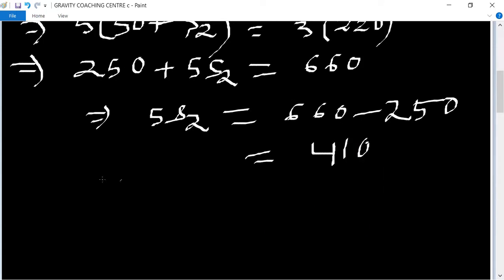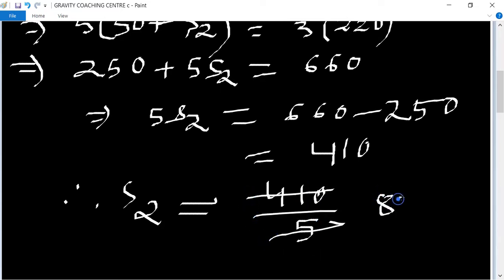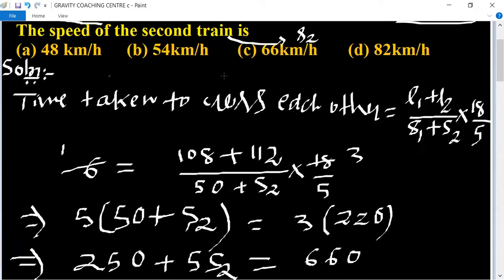Therefore S2 equals 410 upon 5. After canceling, 82. So 82 means option D is the right answer.